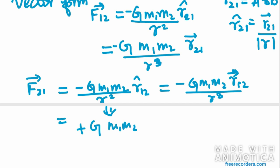Or positive G·m1·m2/r²·r̂21. Because we have r̂12 equal to minus r̂21. Therefore we can write like this.